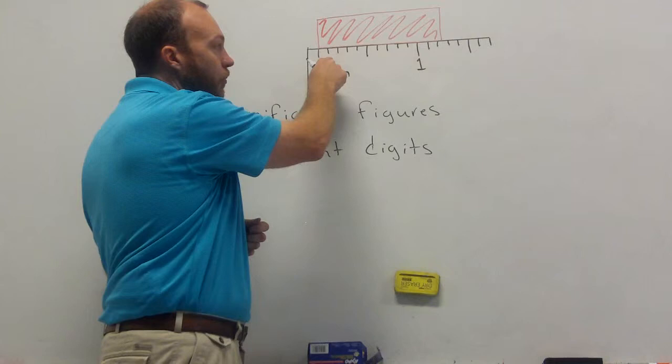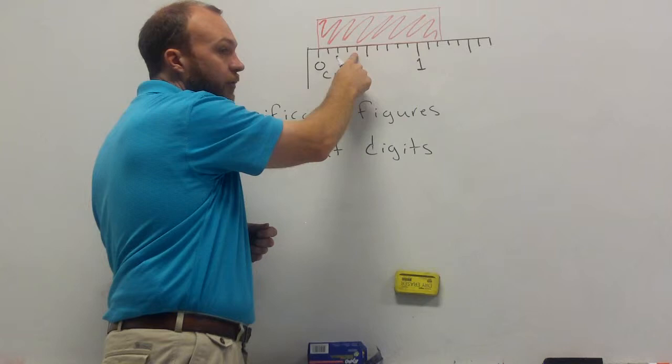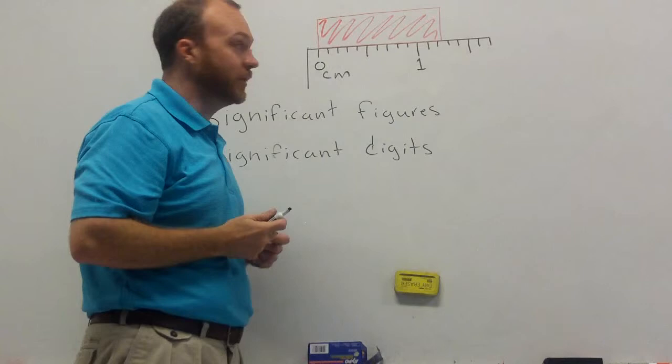So, if I am counting here, this is .1 centimeters, .2 centimeters, .3 centimeters, .4 centimeters, or you can count it as one millimeter, two millimeters, three millimeters, four millimeters, five millimeters.